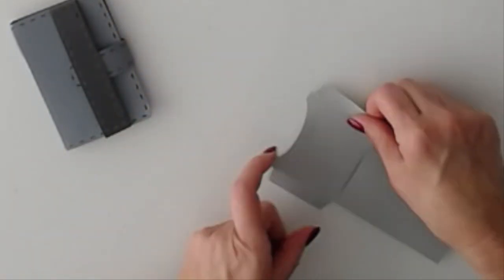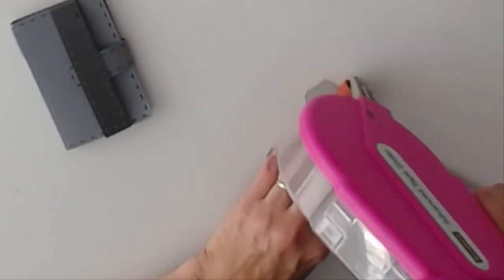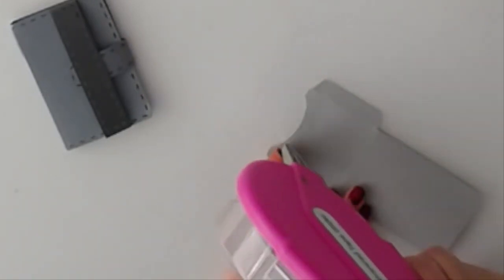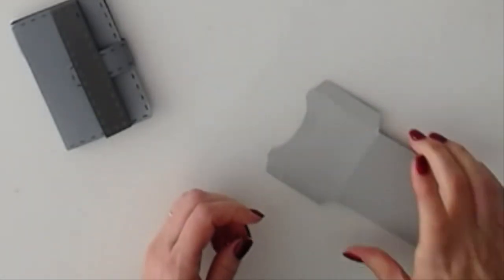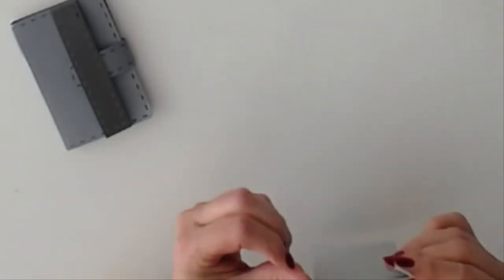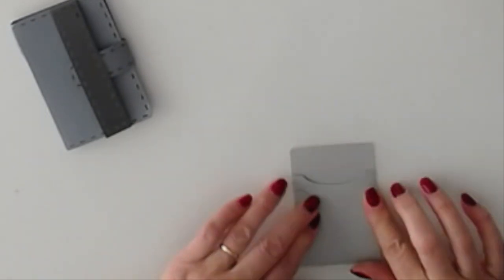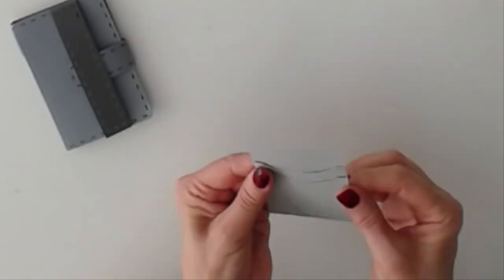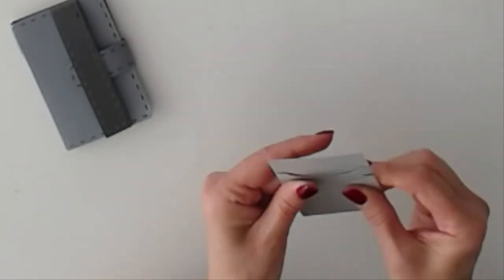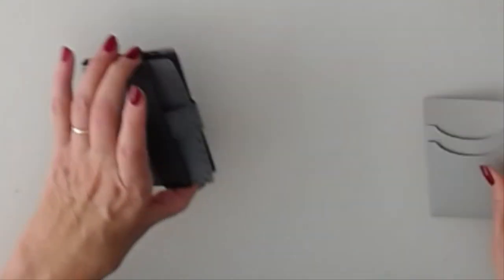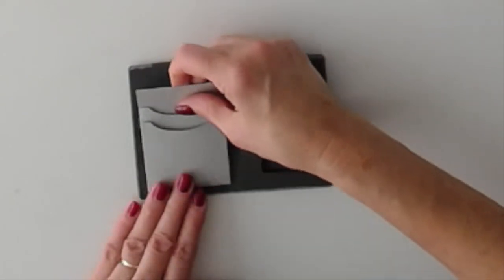We're going to flip it over. Run our adhesive along the tabs. And then fold them in and fold up. I got some adhesive on the edge. We'll just rub it off.